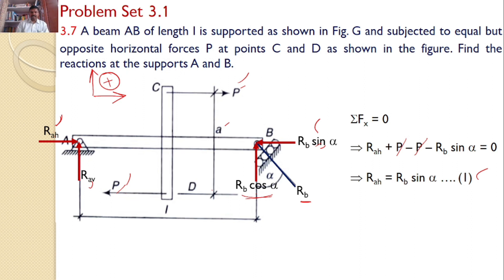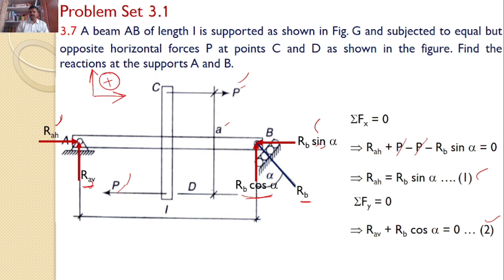Now consider the second equilibrium equation, sigma Fy = 0. The forces along the y-axis give: RAV + RB cos alpha = 0. This is equation number 2.